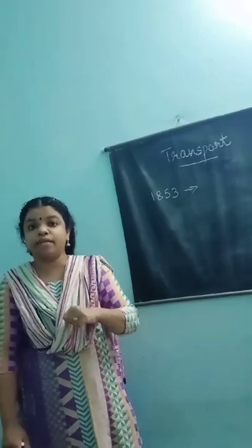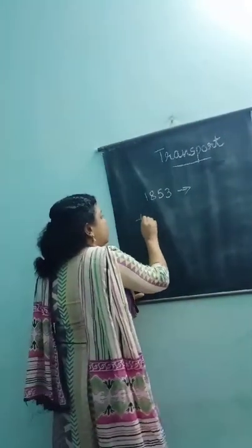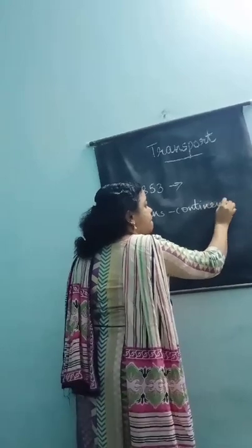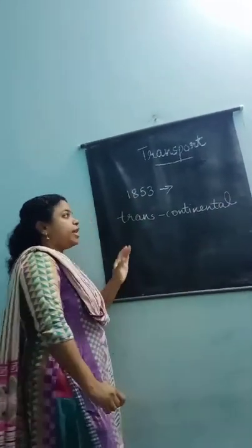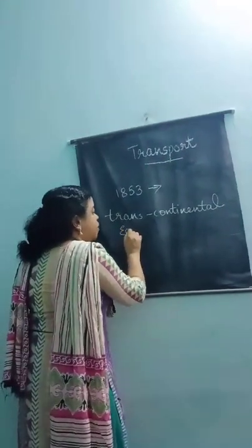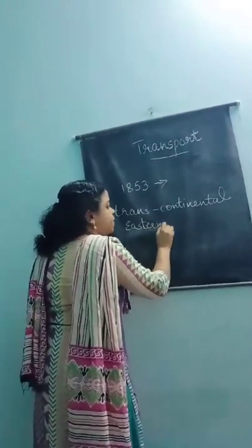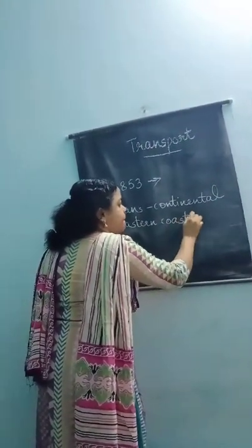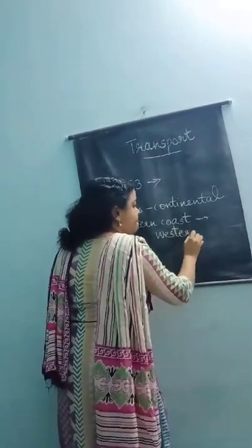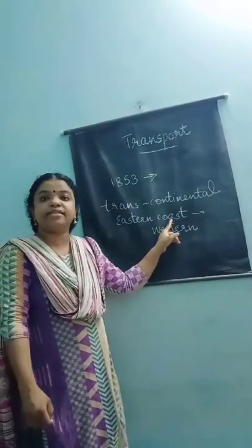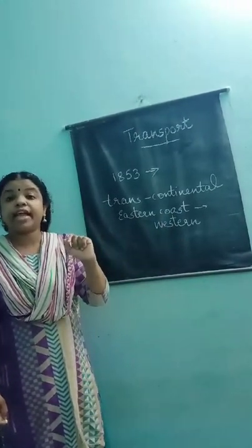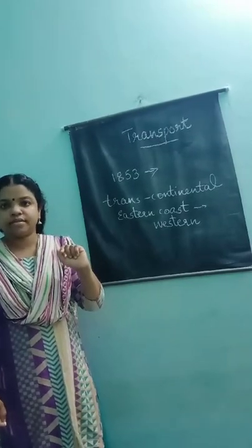Another point: transcontinental railway. What is transcontinental? They are covering from the eastern coast to the western coast — coast means near the sea. We can see these types of trains in USA and Canada.